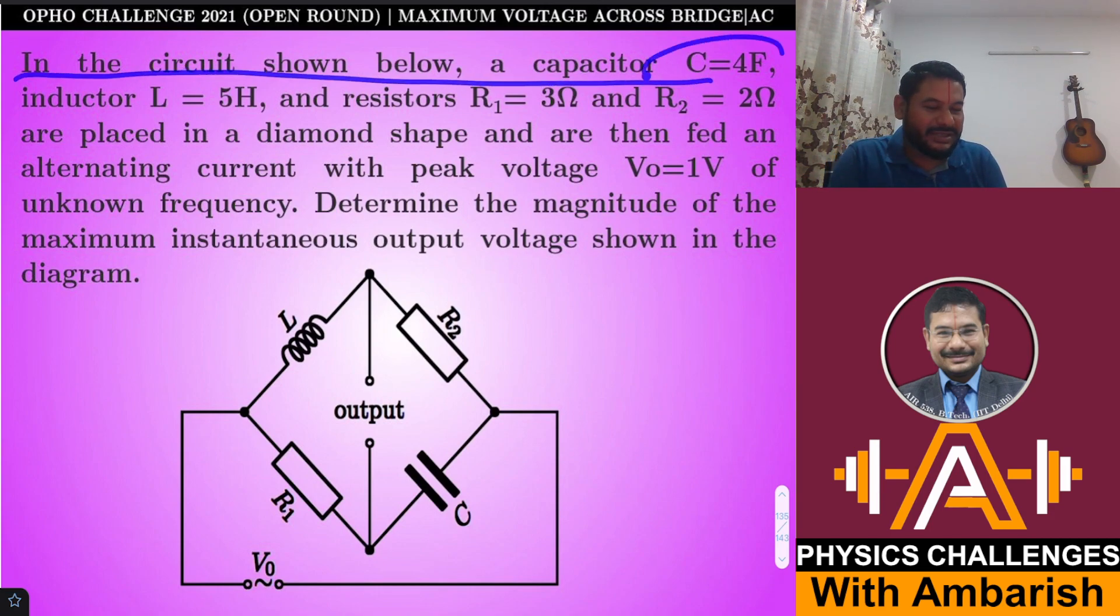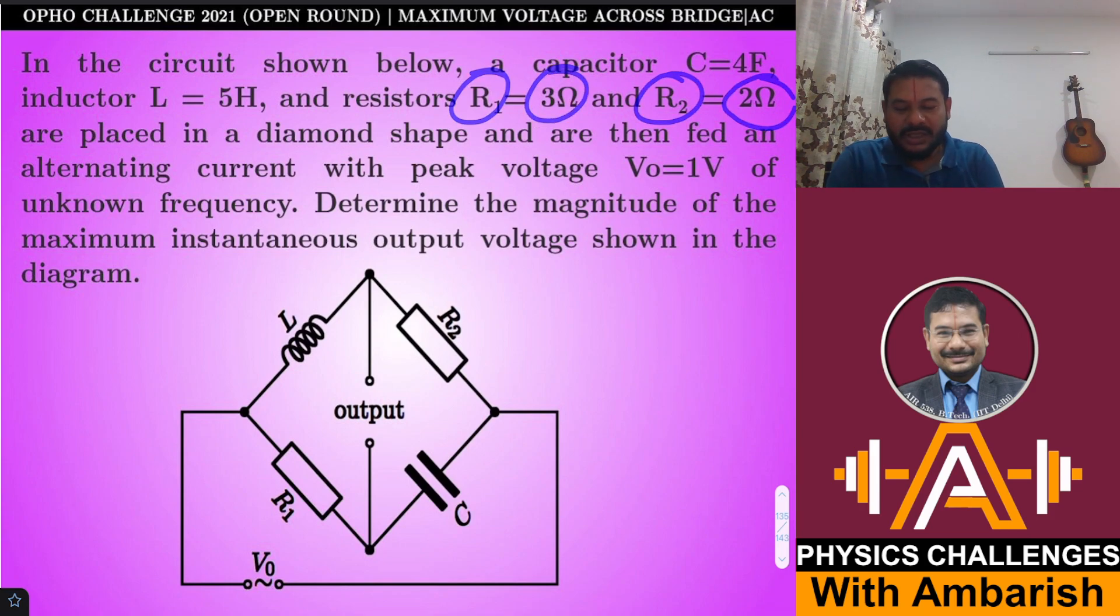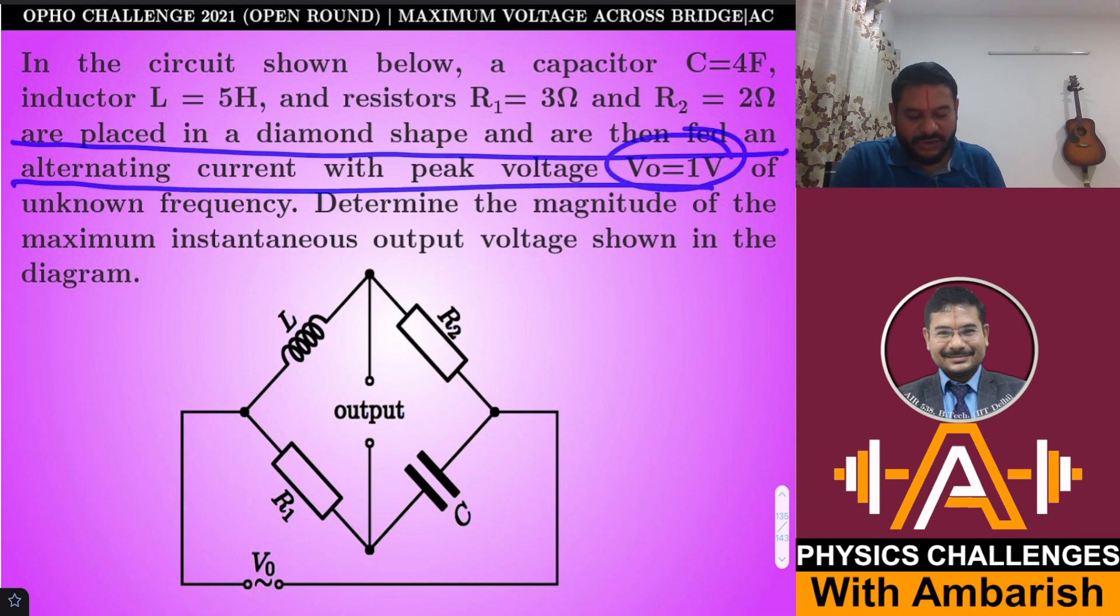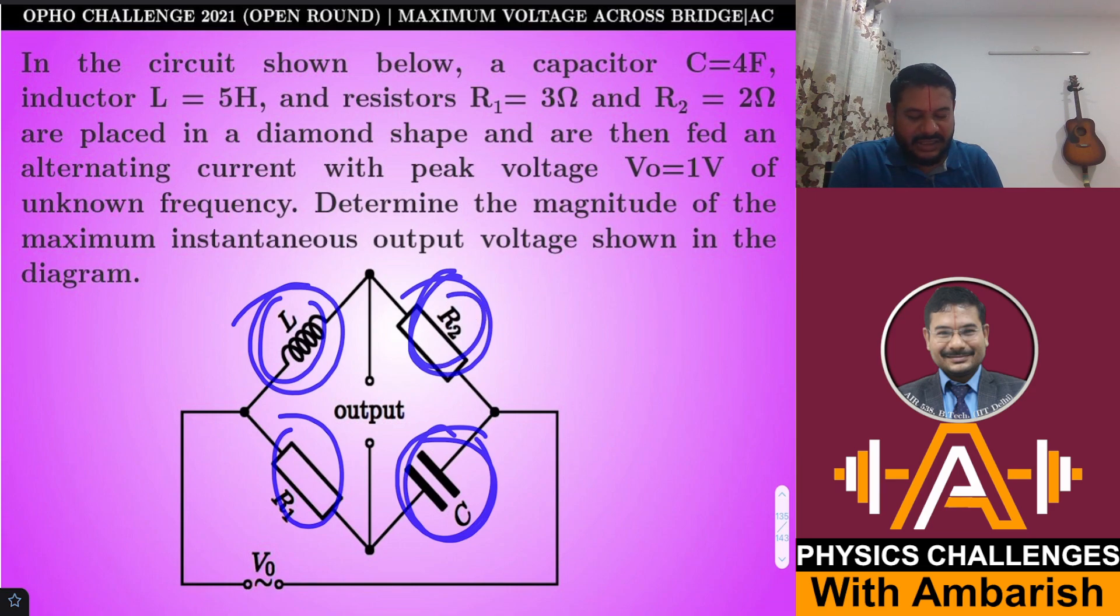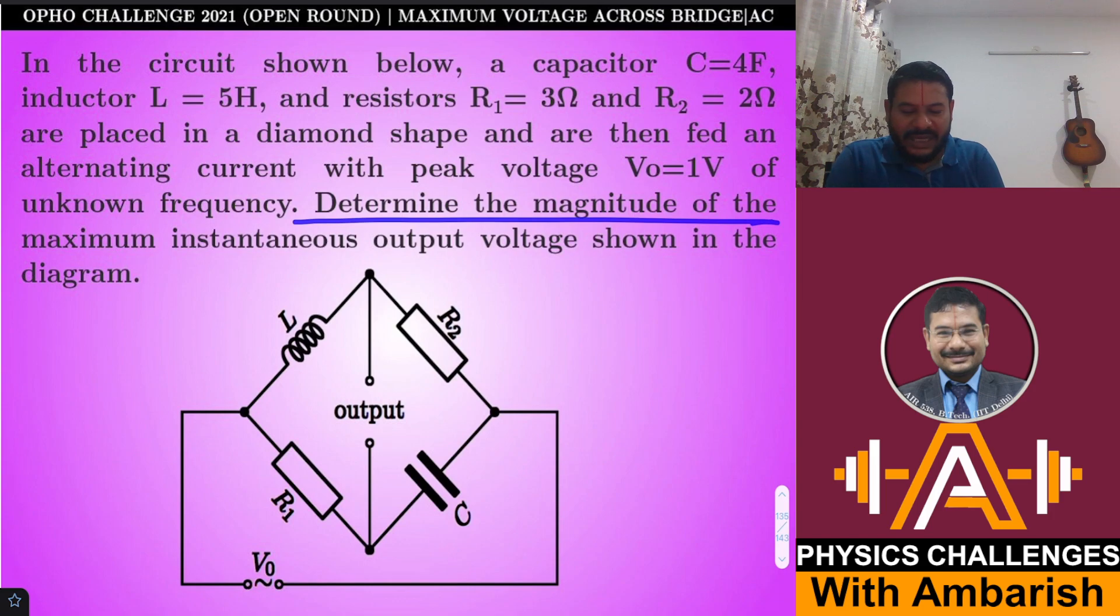In the circuit shown below, a capacitor C = 4F, inductor L = 5H, and resistors R1 = 3Ω and R2 = 2Ω are placed in a diamond shape and fed an alternating current with peak voltage of 1 volt. We have a bridge kind of arrangement: inductor, capacitor, resistor and resistor. Determine the magnitude of maximum instantaneous output voltage shown in the diagram.